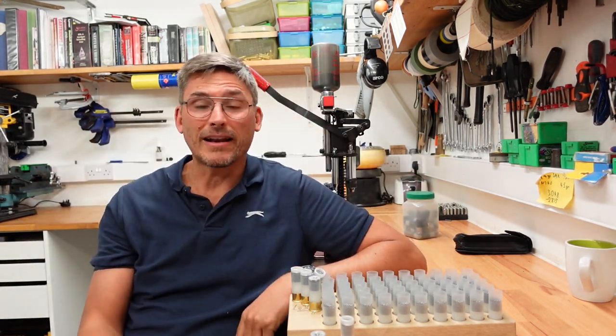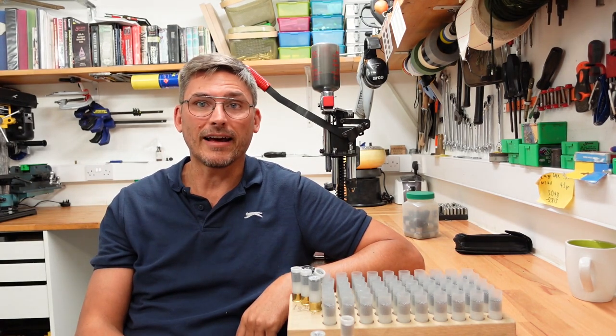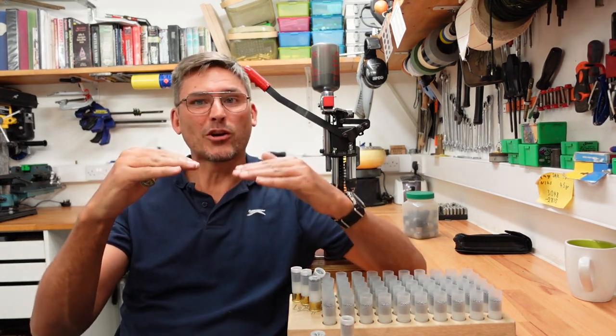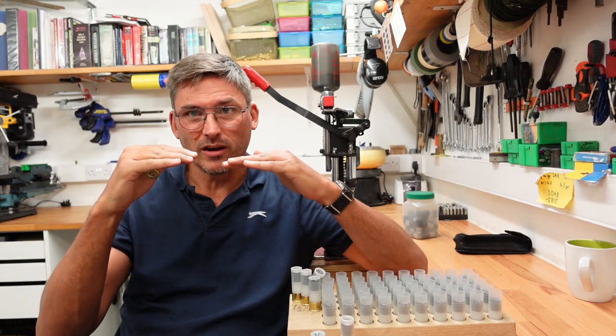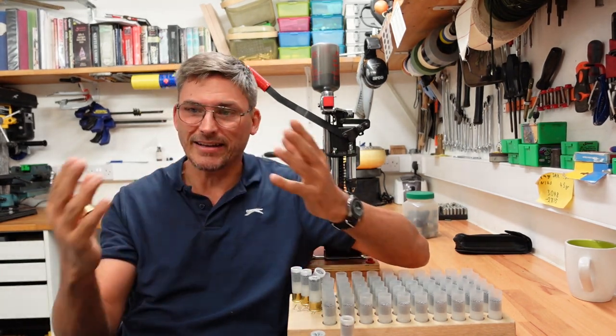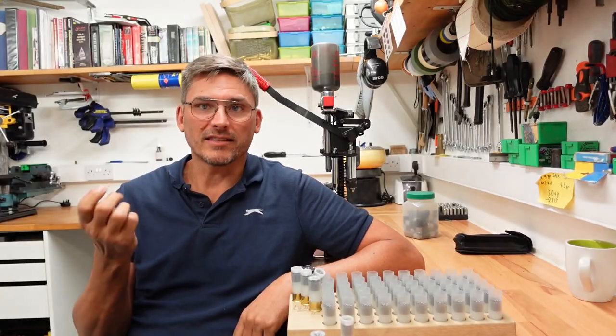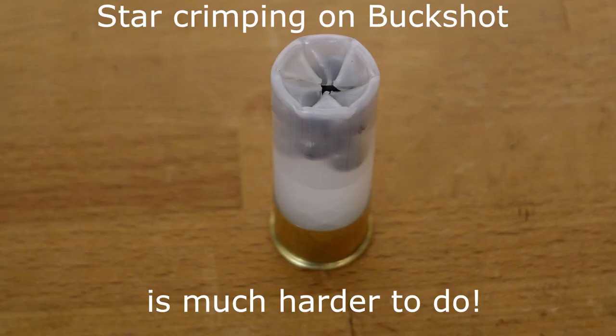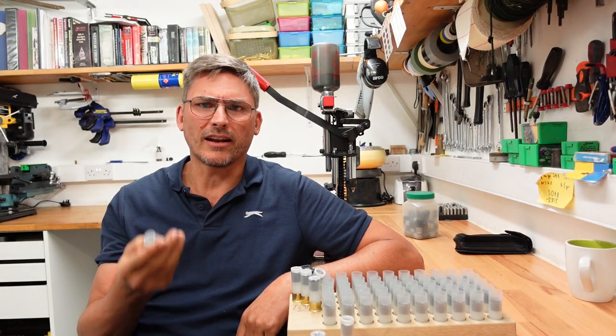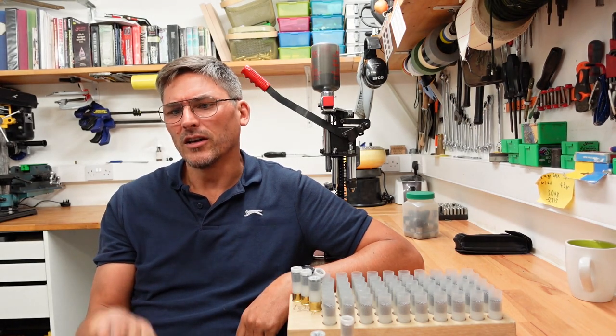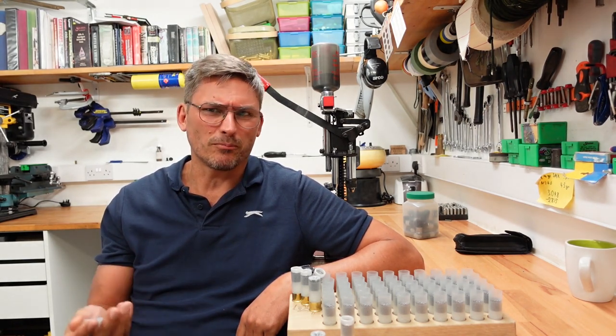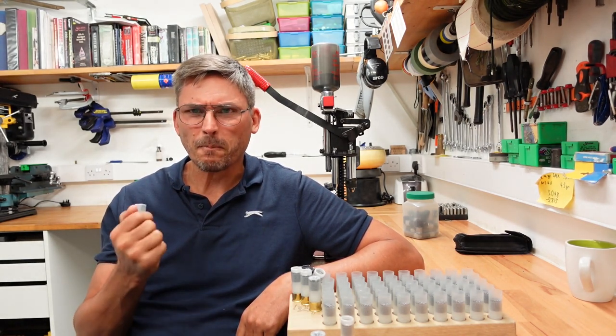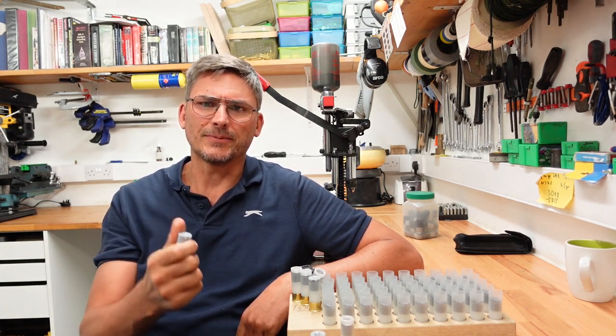And if I went larger, call it 28 or something like that, we probably wouldn't get the crimp on. And even if we would, because there's so much pressure behind it, it would fail. That means it's not always suitable. And in case of, for example, buckshot, it's very hard to get a good star crimp on top of buckshot without using an overshot disc. And so star crimp in many ways is the industry standard for birdshot, but it is a lot more fussy and it's not as easy to do.